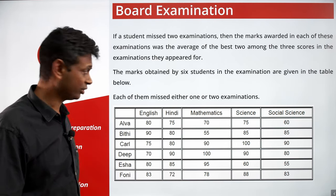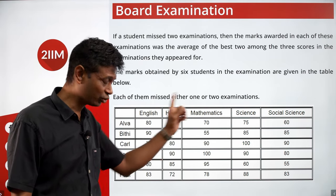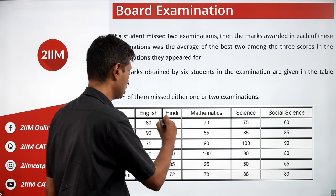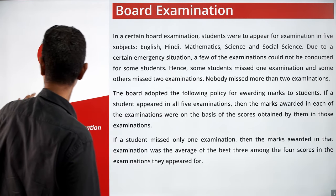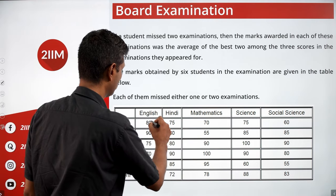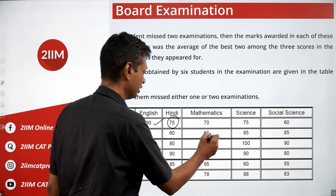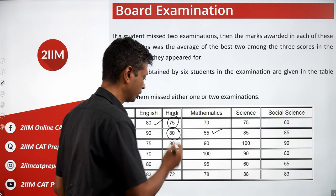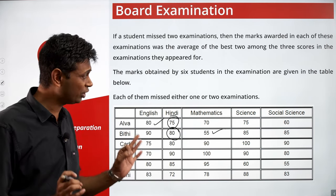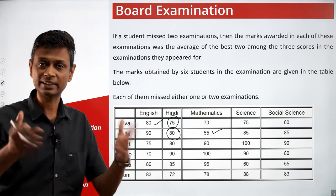I like to have a look at the data to see what we are given. Six people, five subjects. Some scores in the table are going to be actual scores and some are going to be computed averages. Some could be actual, some could be computed. A few are going to be based on the average of some combination of scores.